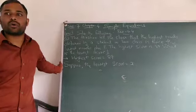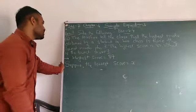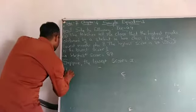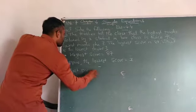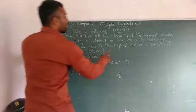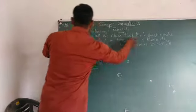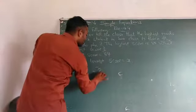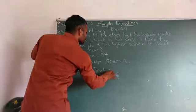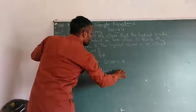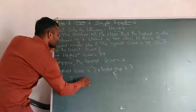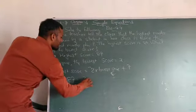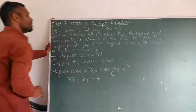Suppose the lowest score is equal to x. Next, highest score is equal to twice the lowest score. So 2 multiplied by lowest score plus 7. Highest score is equal to 87. So 87 = 2x + 7.